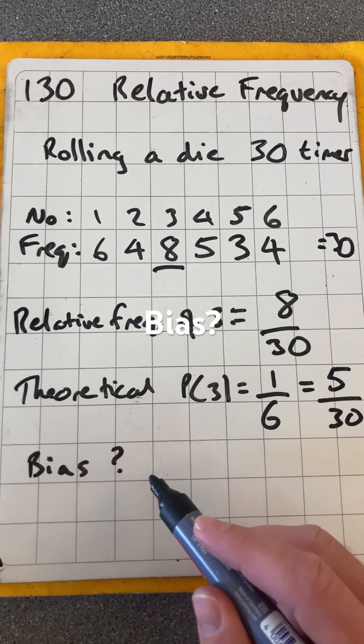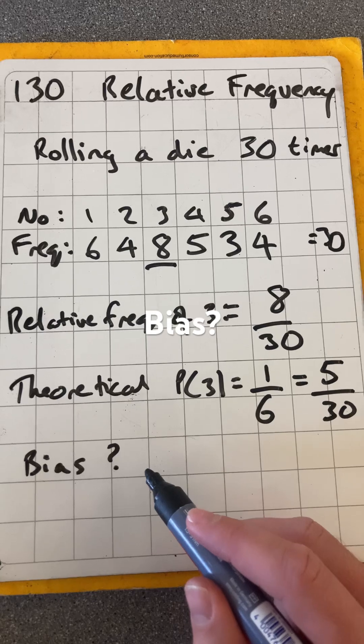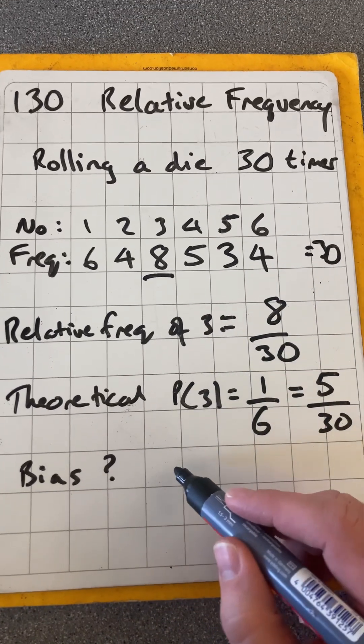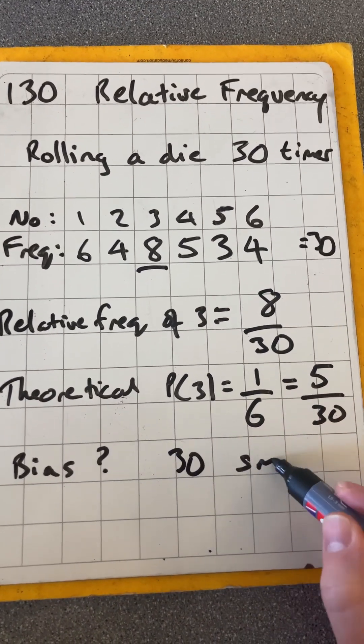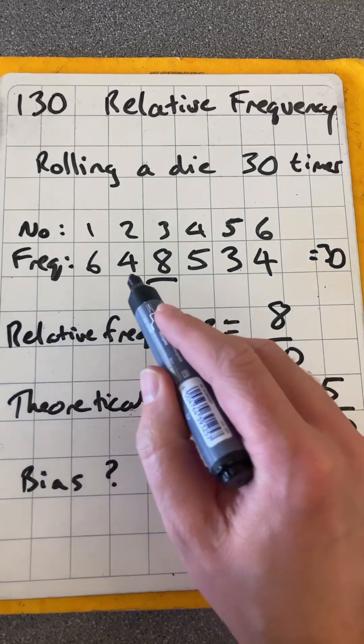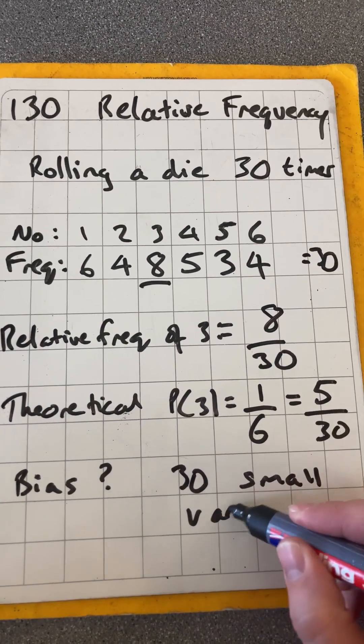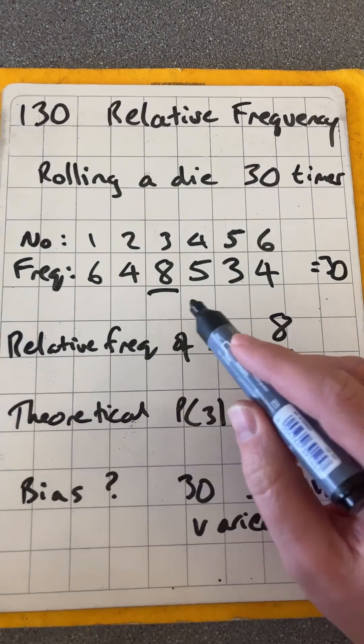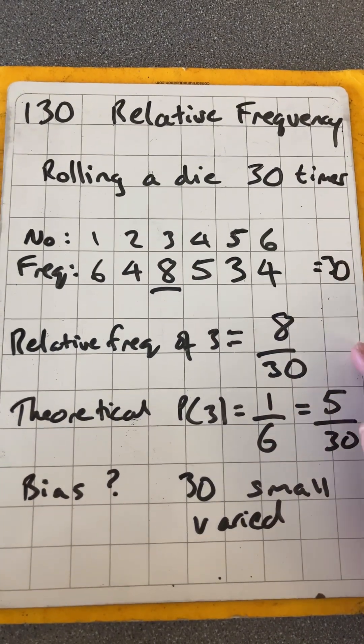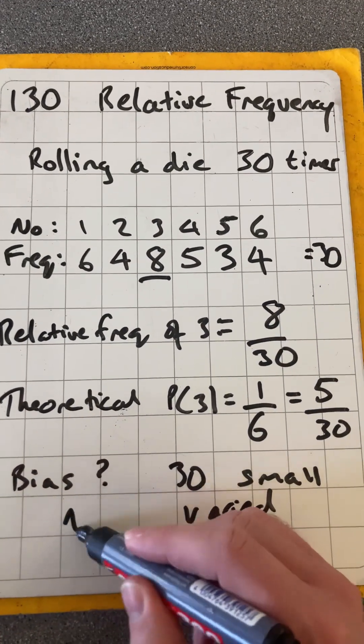Now I could ask, does it look like the die is biased? Well, given that 30 is actually quite small and these numbers are all similarly varied, it doesn't look like anything standing out compared to the others. So I would say in this case no.